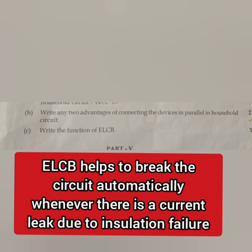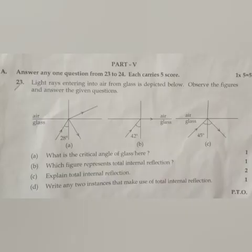Question 23: Light rays entering into air from glass is depicted below. Observe the figures and answer the given questions. (a) What is the critical angle of glass here? Answer: 42 degrees. (b) Which figure represents total internal reflection? Answer: figure C.